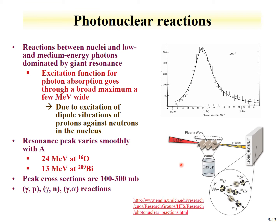Gamma fission has also been studied, where photons can drive a plasma wave and induce photon-induced fission. This is a route for probing materials to look for uranium or other fissile material by activating the gamma fission reaction and then observing the emitted neutrons.